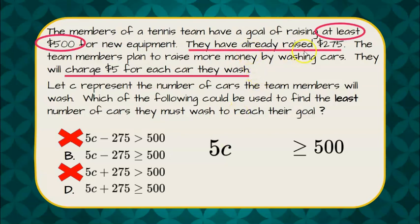Then we know that we have already raised $275. So 5 times the number of cars we wash plus the $275 that we've already earned needs to be greater than or equal to $500, giving us that it is choice D. We would not subtract our $275 we already have. We would add that to our profit of $5 per car.